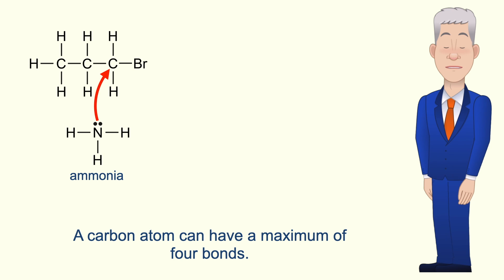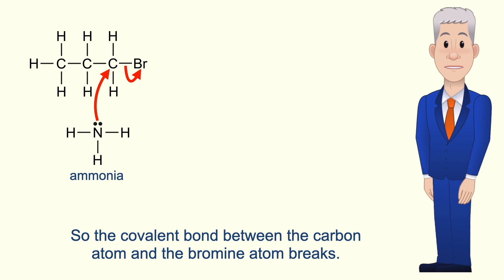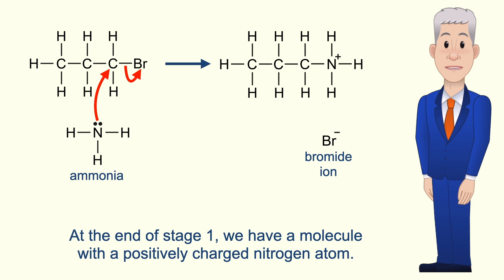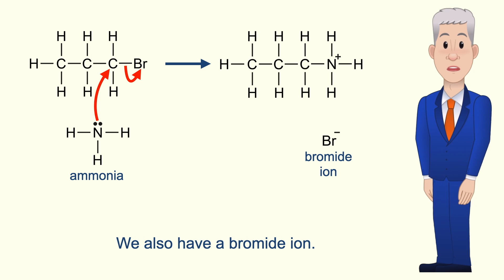Now a carbon atom can have a maximum of four bonds, so the covalent bond between the carbon atom and the bromine atom breaks. This is heterolytic fission, with both electrons moving on to the halogen. At the end of stage one we have a molecule with a positively charged nitrogen atom. We also have a bromide ion.